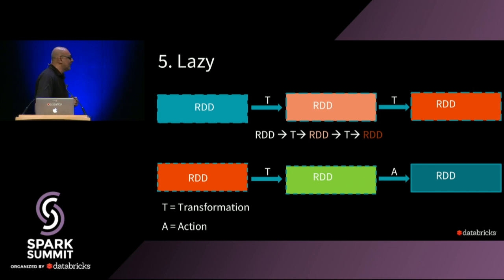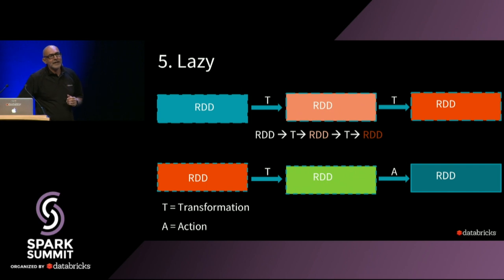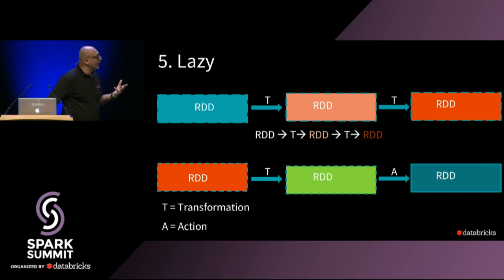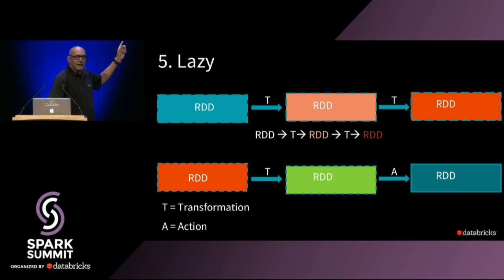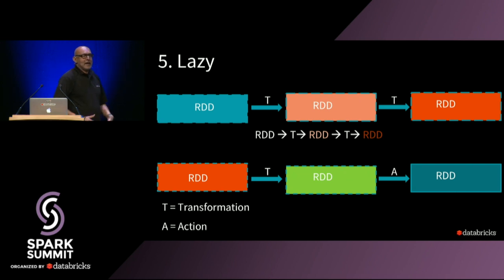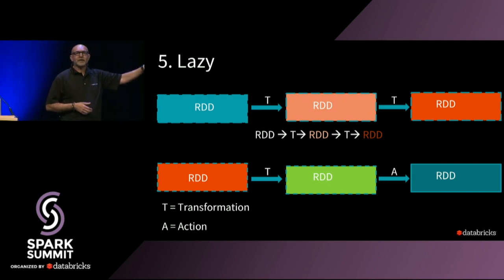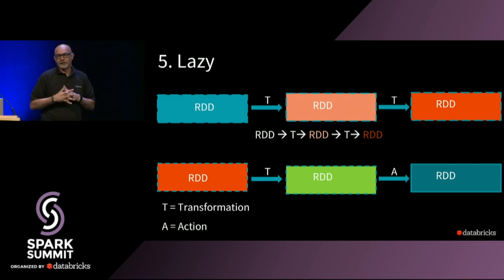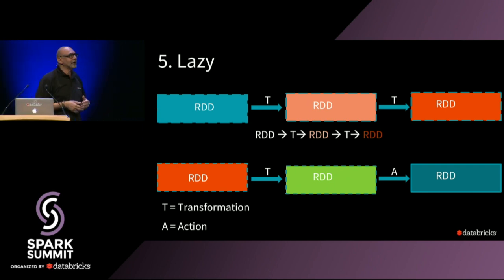The fifth characteristic is that RDDs are lazy — not in a slothful manner, but they don't get materialized until you perform a certain action. Transformations happen across multiple RDDs, and an action is where your entire chain of the acyclic graph gets executed. Every time you perform an action, Spark can coalesce certain transformations — combining map and filter into one stage, then acting when there's a reduce-by-key and a shuffle.